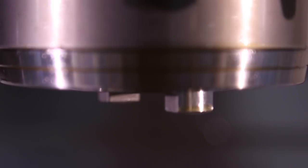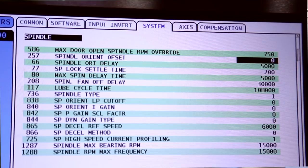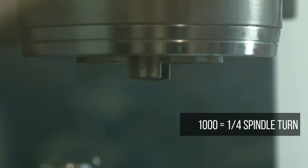Now your drive dogs will not be in the correct position to do a tool change so we need to adjust that by changing parameter 257. For reference a value of a thousand is equal to a quarter turn of the spindle so I'll use that as my baseline.